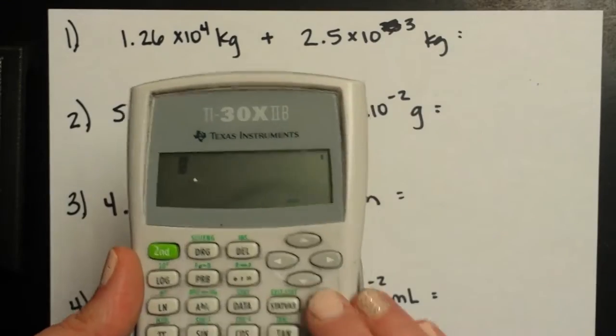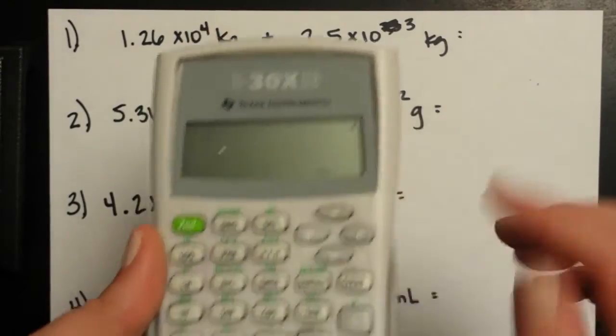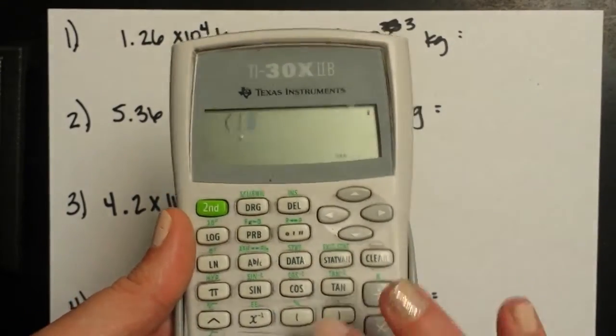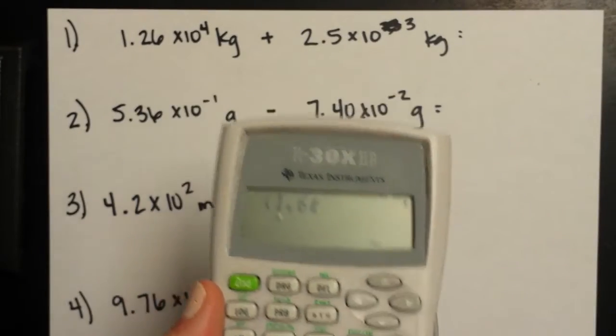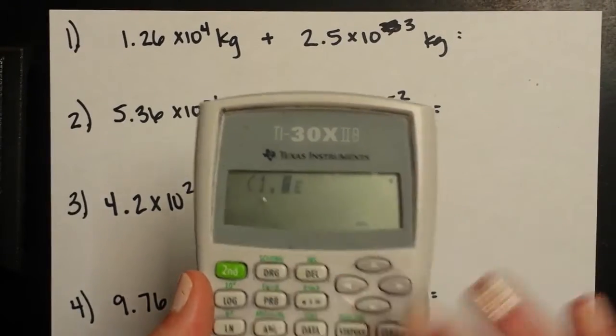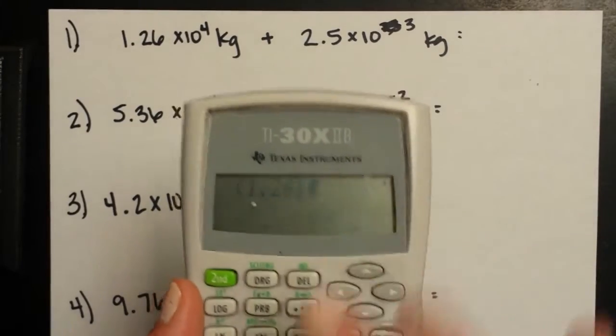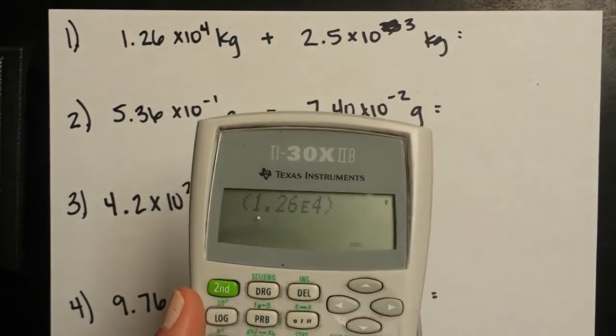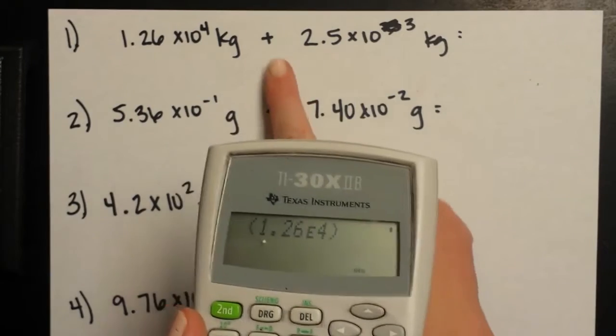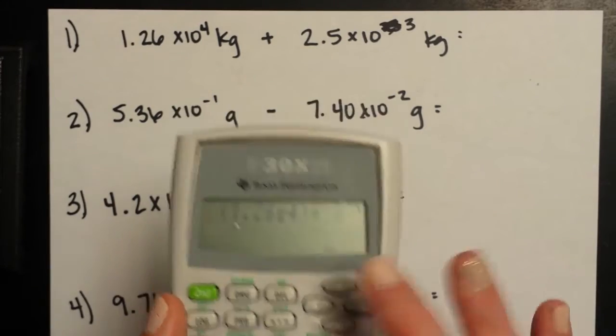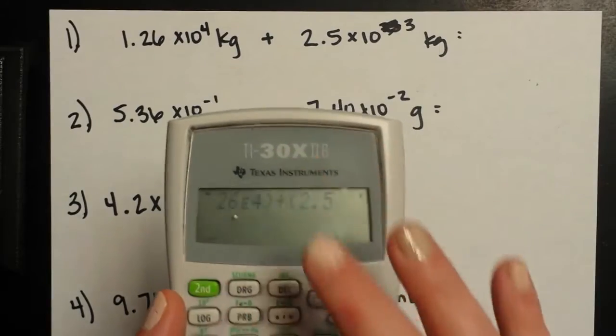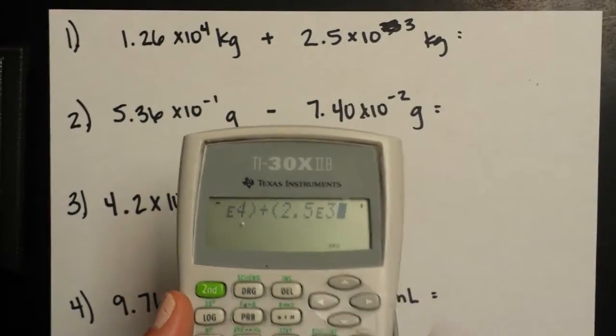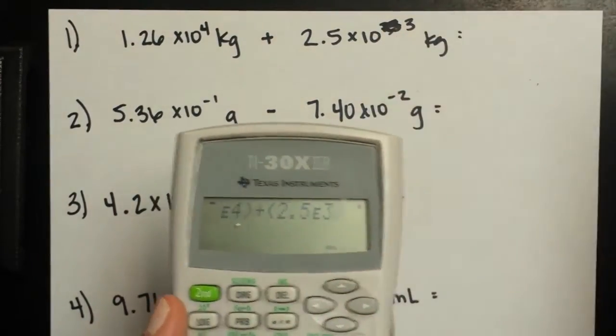So here for 1.26 times 10 to the 4th, I'm going to start some parentheses and do 1.26. Use that function. Times 10 to the 4th. Close my parentheses. I'm adding it. So plus new parentheses set. 2.5 times 10 to the 3rd.